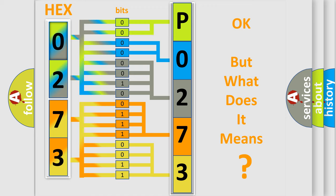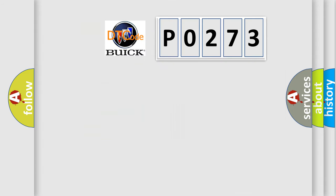We now know in what way the diagnostic tool translates the received information into a more comprehensible format. The number itself does not make sense to us if we cannot assign information about what it actually expresses. So, what does the diagnostic trouble code P0273 interpret specifically for Buick car manufacturers?